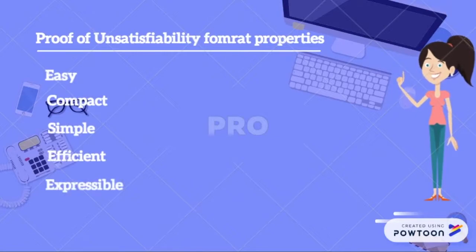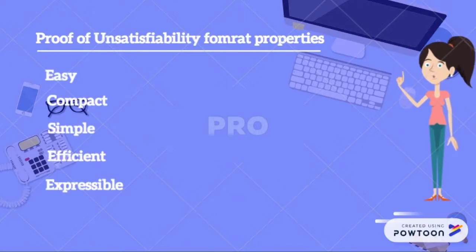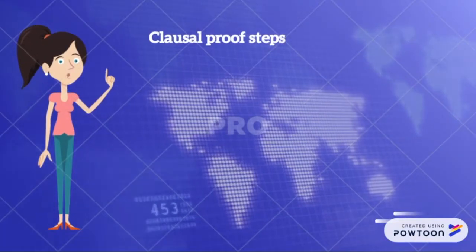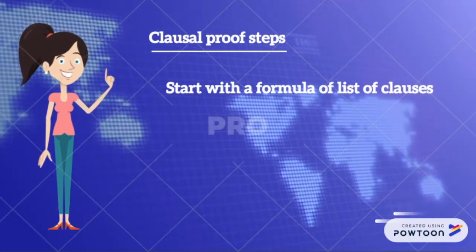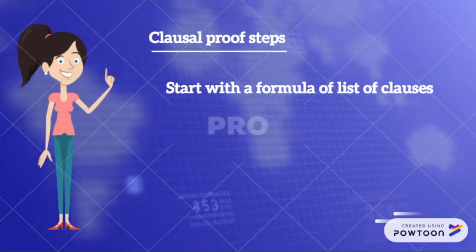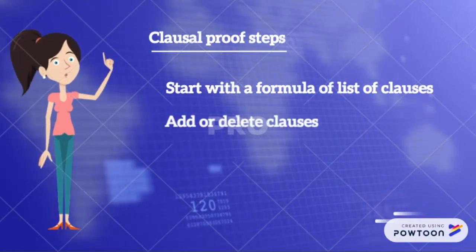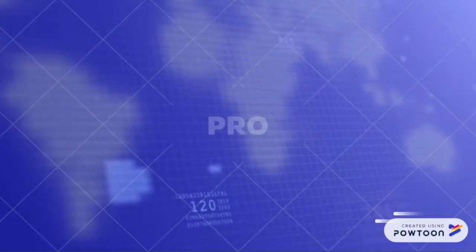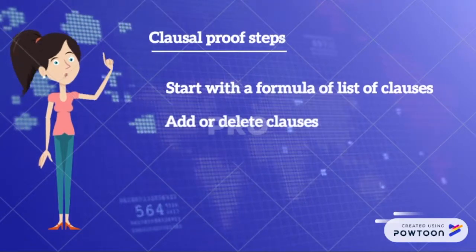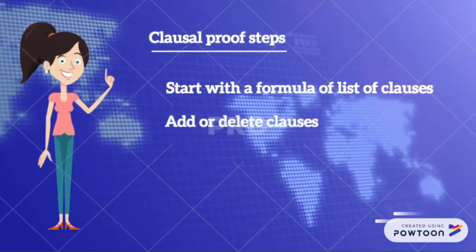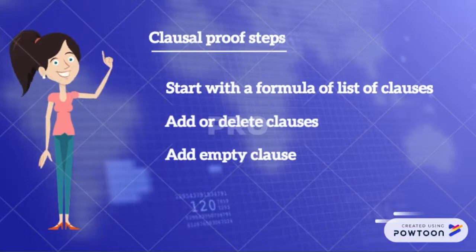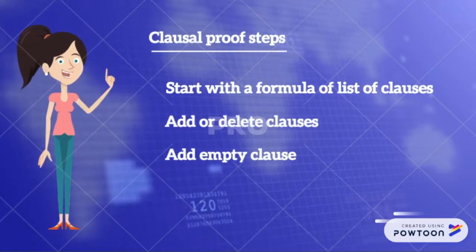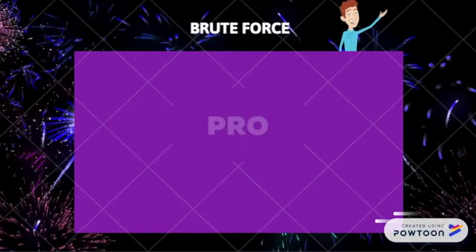The proof format has five properties: one, easy production, to ensure support by many solvers; two, compact, to have small overhead; three, simple, to avoid trust issues; four, efficient, to make verification useful in practice; and five, expressible. Although these five properties are given, it is hard to achieve easy, compact, and expressible simultaneously. Proof works as follows: start with a given formula composed of a list of clauses, then add or delete clauses — we choose addition because it is solution-preserving — and keep adding and deleting clauses until we add the empty clause, which marks unsatisfiability.